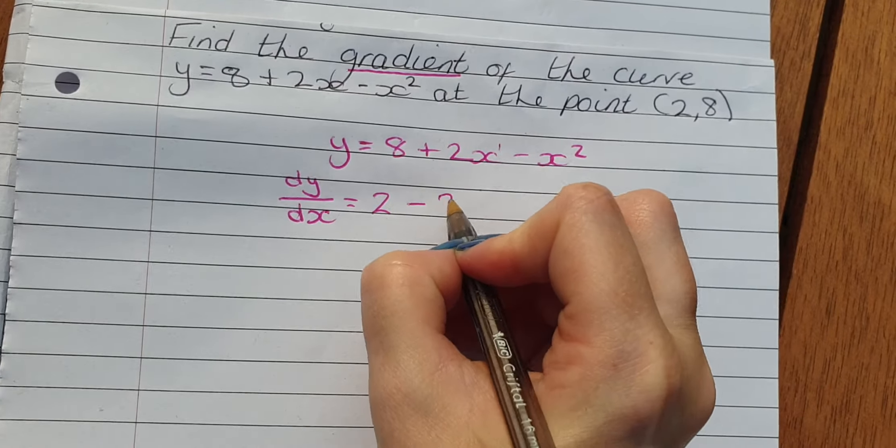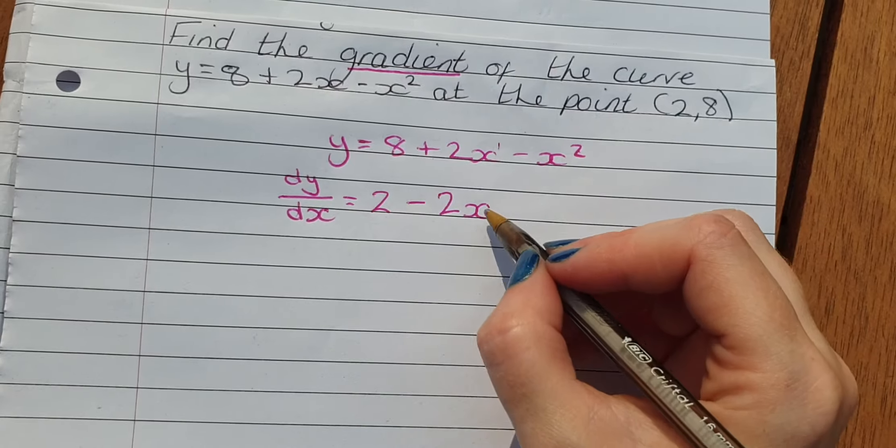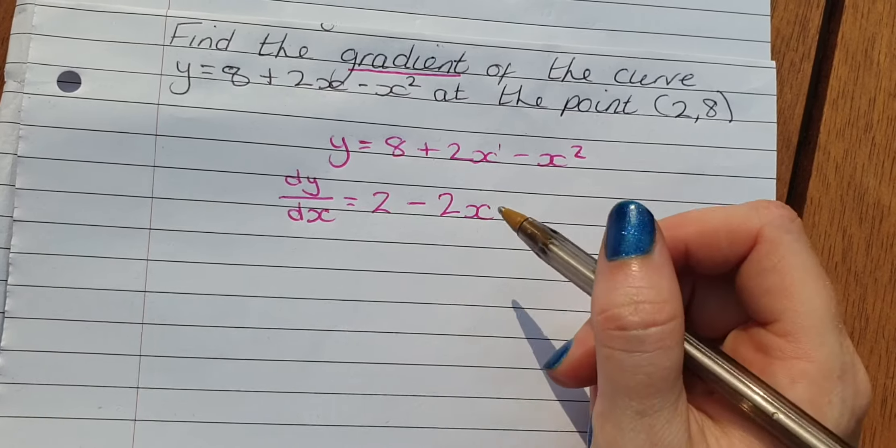Differentiate this: bring the power down and reduce the power by 1. So it's got a 1 there and I don't need to write it.